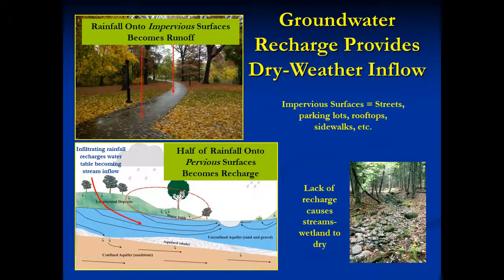In general, about a fourth of the precipitation falling upon a watershed will soak into the soil to a depth below the root zone of trees or other vegetation. This infiltrated water will then flow through the earth until it encounters a well, a seep, a spring, a stream, a lake, or a tidal body. It is this process which provides the water entering a wetland or stream when a few days have passed since the last rain. The movement of rain or other precipitation into the soil is called groundwater recharge.